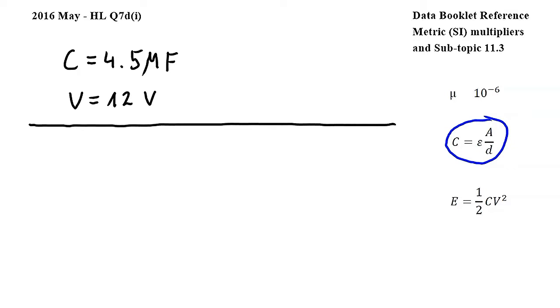So for the dielectric material, epsilon in this equation is twice as much as that of vacuum. Since A and D are unchanged, doubling epsilon means that C, the capacitance, will also double.